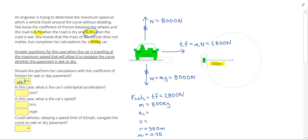To get my acceleration, I can rearrange Newton's second law, so AC equals Fnet C divided by m, or 2,800 divided by 800, which gives me 3.5 meters per second squared.